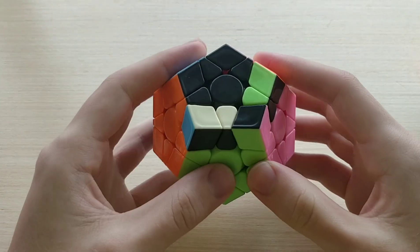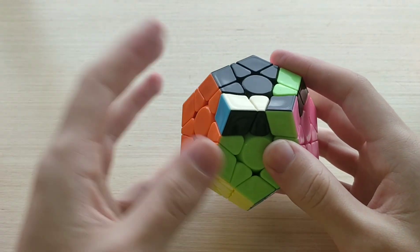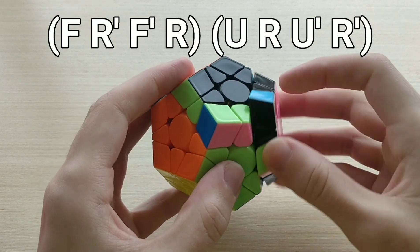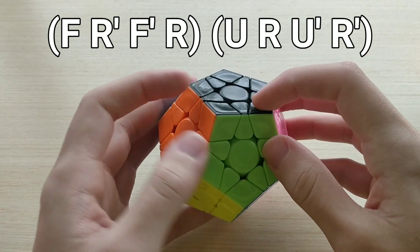And for this case on the right, for 22b, it's just hedge inverse Sexy. So that looks like this. F r' f' r u' r' r'. And a little bit faster.